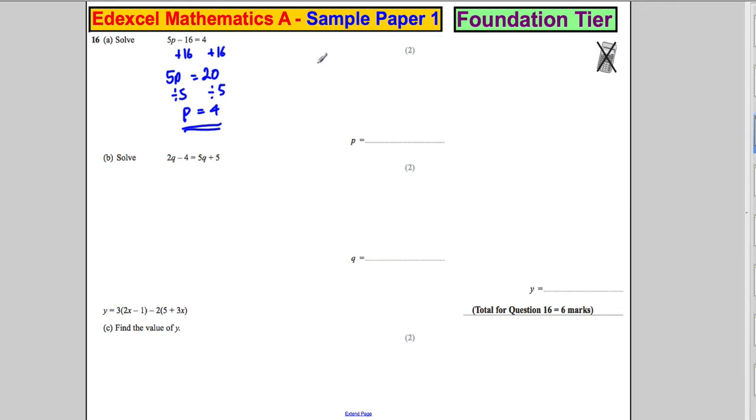Alternatively, you could use a flowchart method. How do you get 5P minus 16? You start off with P. The first thing you do to it is you times it by 5 and you get 5P. The next thing you do to it is you subtract 16 and you would get 5P subtract 16. You know that's equal to 4.